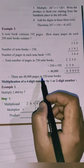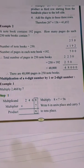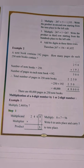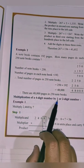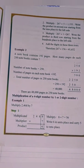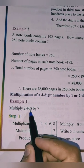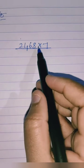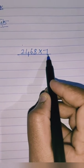Therefore there are 48,000 pages in 250 notebooks — that is your answer. Now we'll move on to another concept: multiplication of a four-digit number by a one or two-digit number. For example, multiply 2468 by 7.